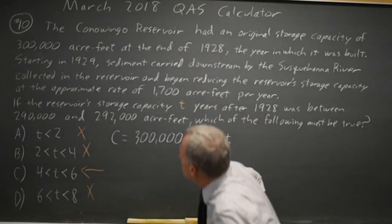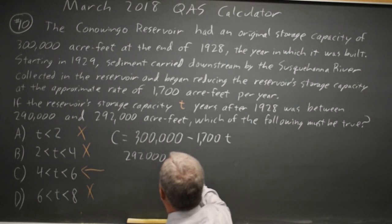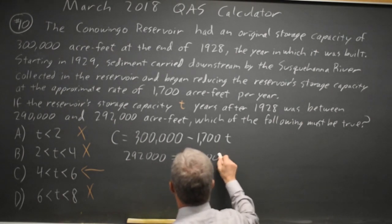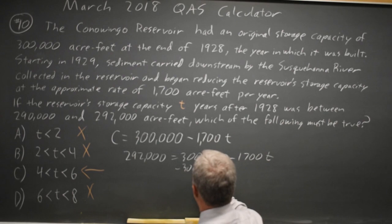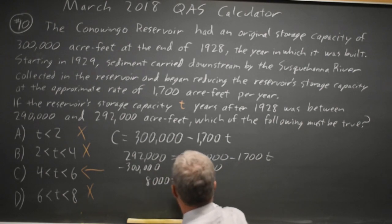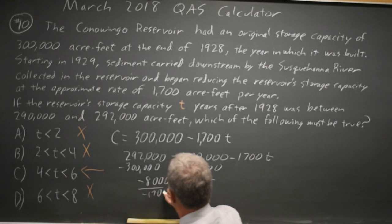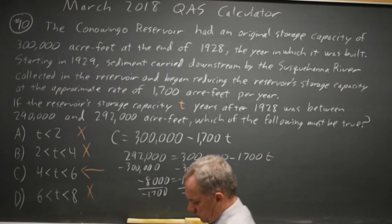Alternatively, I can put in a C value like 292,000 equals 300,000 minus 1,700T. Subtract 300,000 from both sides, and I get negative 8,000 equals negative 1,700T. Divide both sides by negative 1,700, and I get T at that endpoint is 4.7.